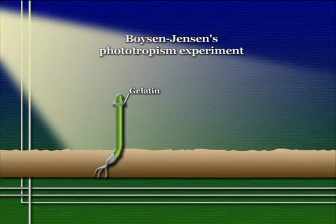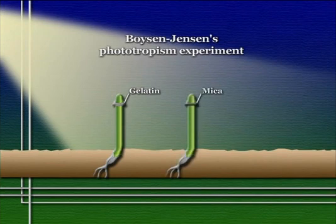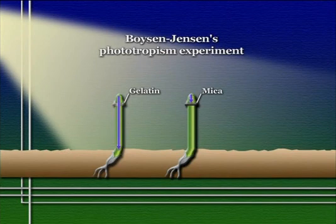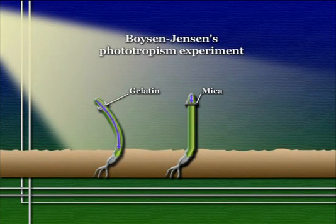The Darwins never got around to testing this hypothesis, but it was tested decades later in the early 20th century by a Danish physiologist named Peter Boysen Jensen. Boysen Jensen cut off and replaced the tips of growing oat shoots, separating them from the rest of the shoot by one of two kinds of materials — either a small gelatin block, through which chemicals could pass, or a thin piece of mica, through which they couldn't. He found that if he separated the tip with a piece of gelatin, the shoot would show a phototropic response, but if he separated it with a piece of mica, it wouldn't. This provided strong support that there must be a chemical transmitted from the tip down to the rest of the shoot.